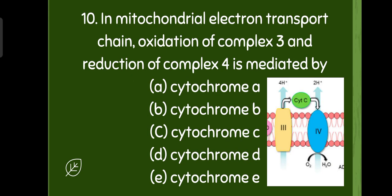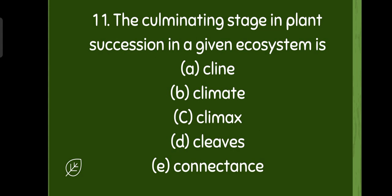In mitochondrial electron transport chain, oxidation of complex three and reduction of complex four is mediated by cytochrome c. Option C is the right one. The culminating stage in plant succession in a given ecosystem is the climax. Option C is the right one.